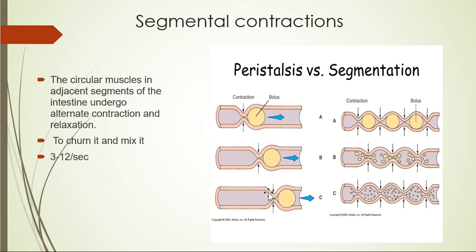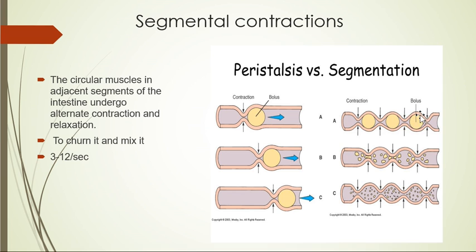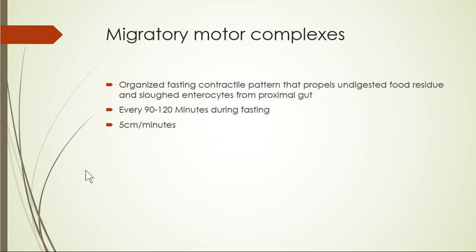The next movement is segmental contraction. Compared to peristalsis, which propels content, segmental contractions involve alternate contraction and relaxation. One segment contracts while the adjacent segment relaxes, then they switch. The purpose of this movement is to mix the chyme with secretions rather than to propel it. The rate is around 3 to 12 per second.